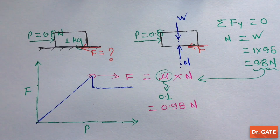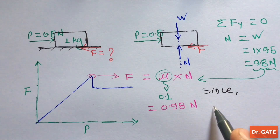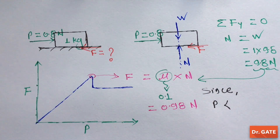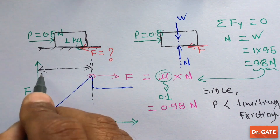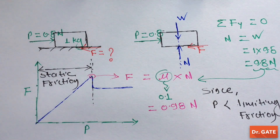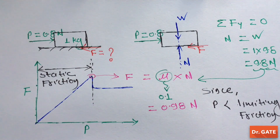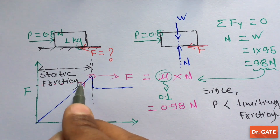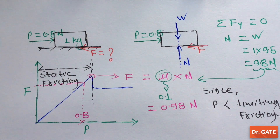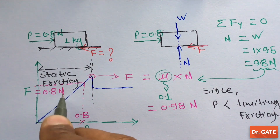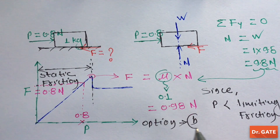One should note that since the value of the external pushing force (0.8 N) is less than the value of limiting friction (0.98 N), the block is at rest. That means it is a case of static friction, and in static friction the frictional force equals the external pushing force — that is, 0.8 N. So option B is correct.